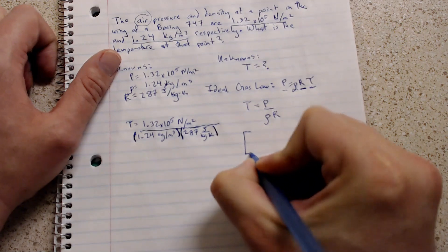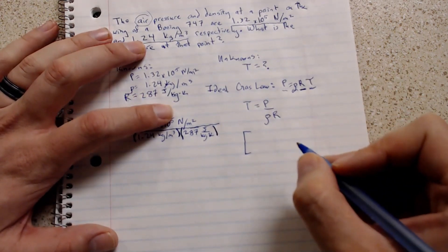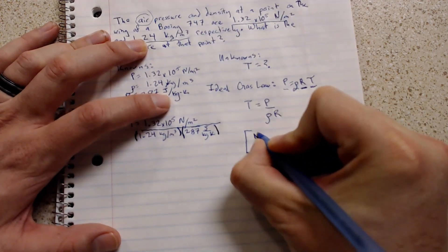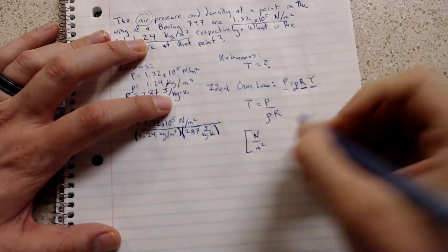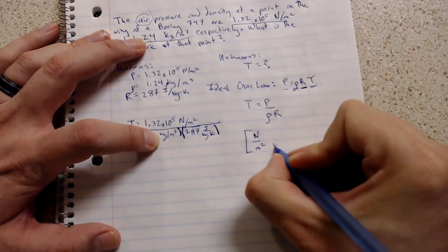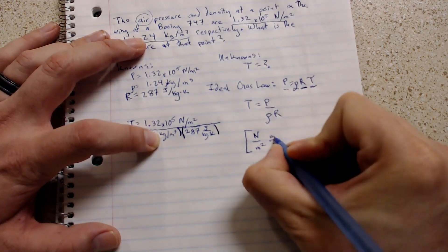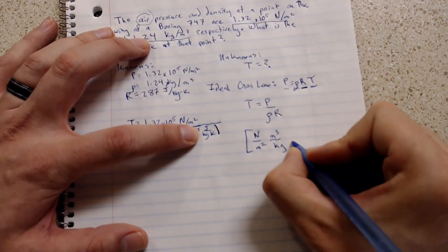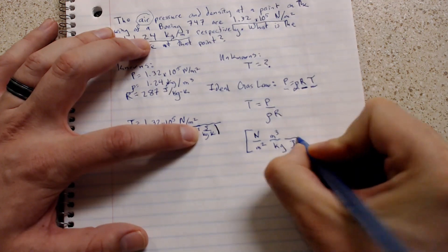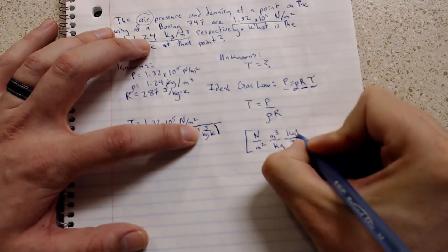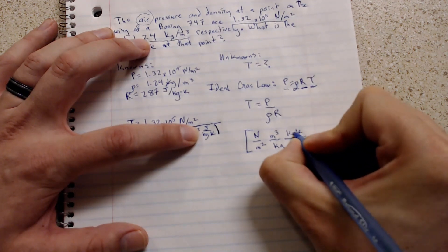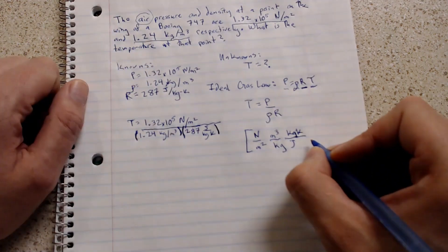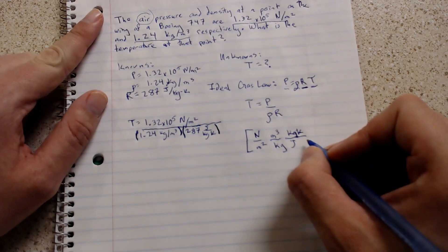Before we plug and chug let's just take a look at the units to see if there's anything we need to convert to make sure the units check out. Looking at the top here I have newtons on the top, I have meters squared on the bottom. Down here I have kilograms on the bottom, meters cubed on the top. Coming over here I have joules on the bottom, kilograms Kelvin on the top. Make that a little clearer. If you look, kilograms cancel.